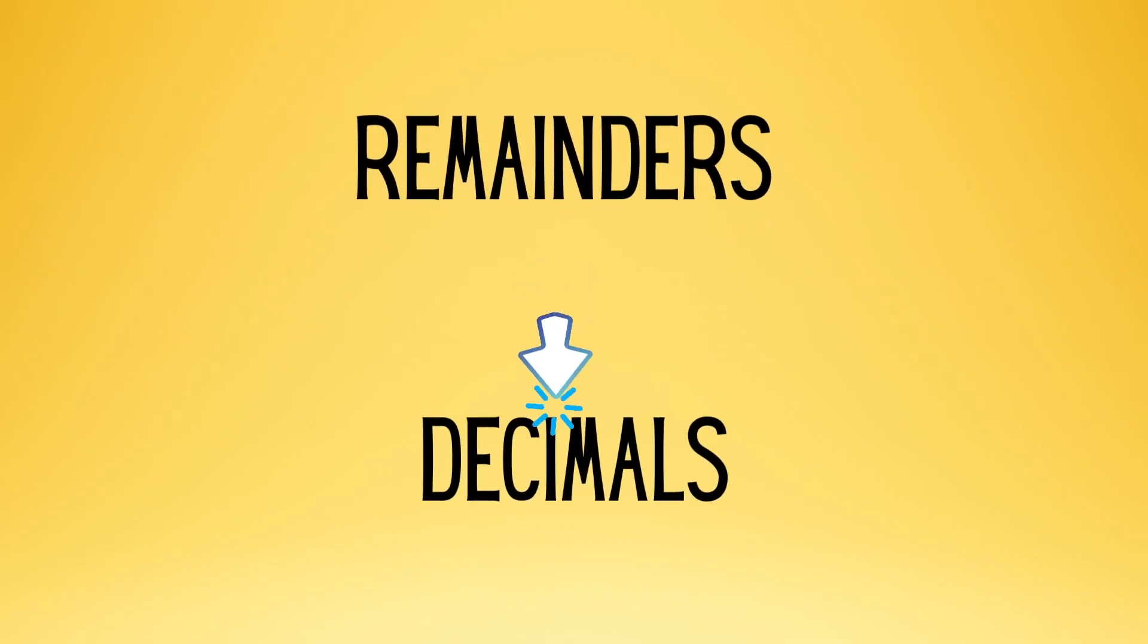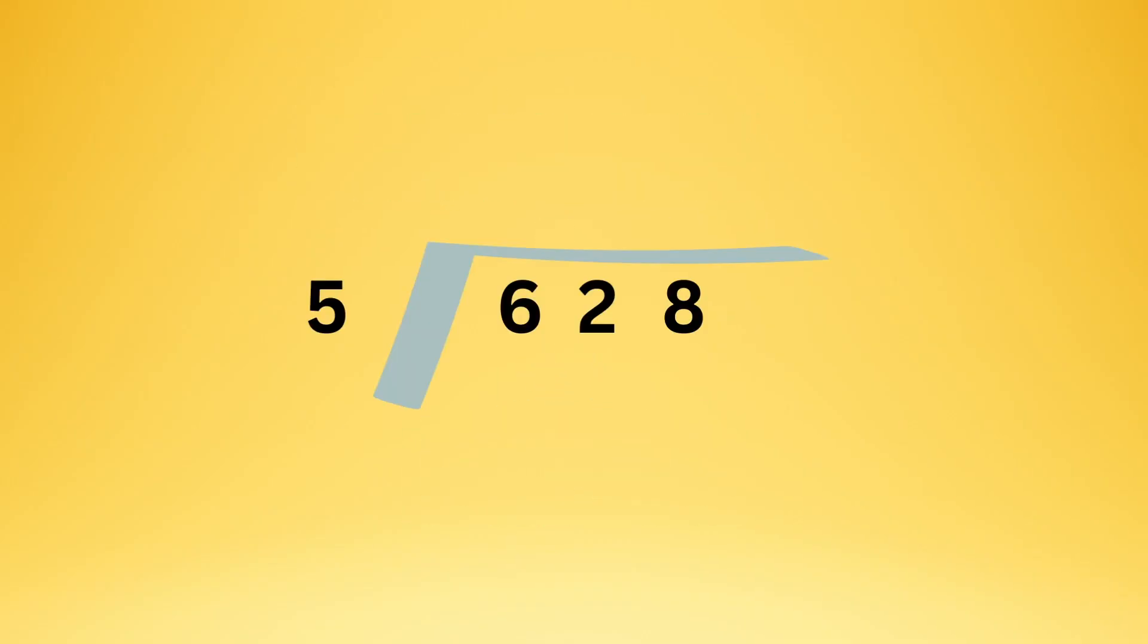Okay, this is how we turn remainders into decimals. So you have something like 628 divided by 5,